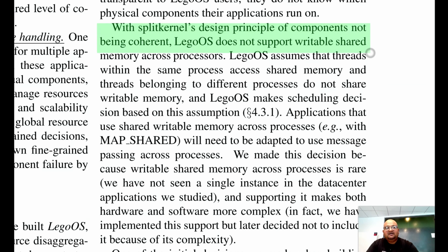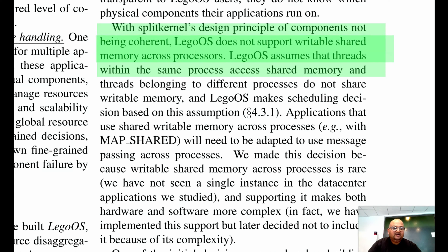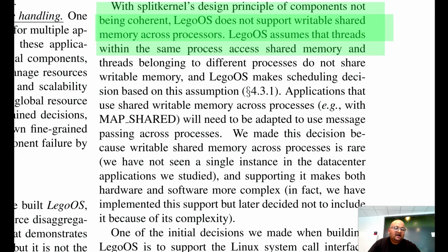One of the design principles of the split kernel was to be as stateless as possible, which leads to components not being coherent across machines. This means that if you're executing a process using two components, there is no effort at the OS level to keep those two components in sync. This implies that Lego OS does not support writable shared memory across processors, which would rule out some applications where two processors communicate with each other using shared memory.